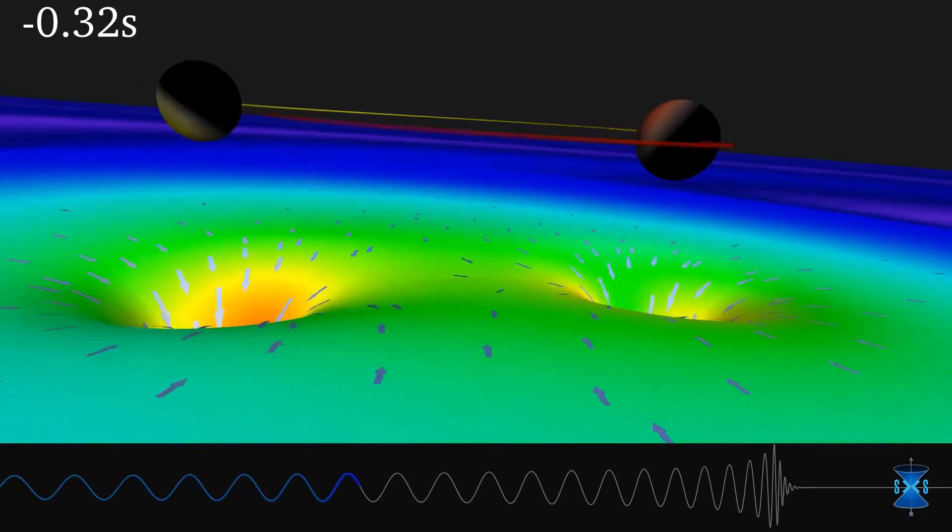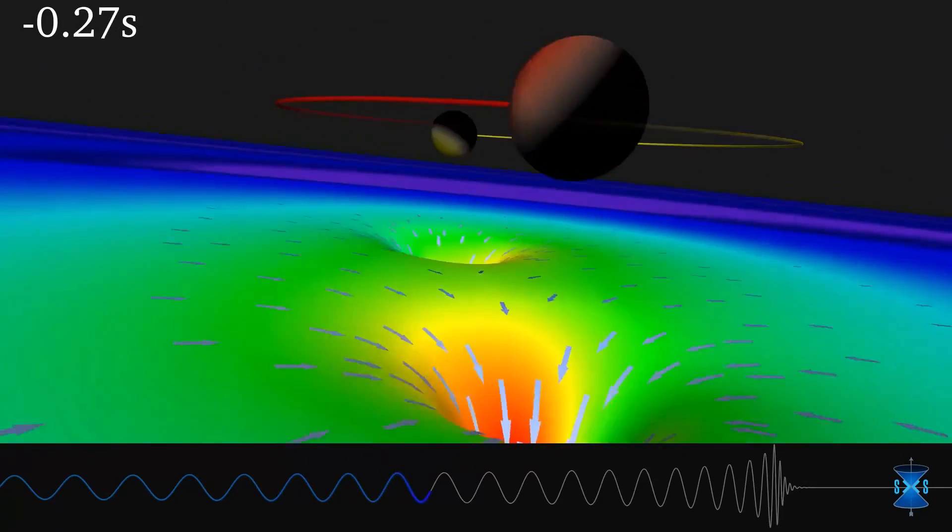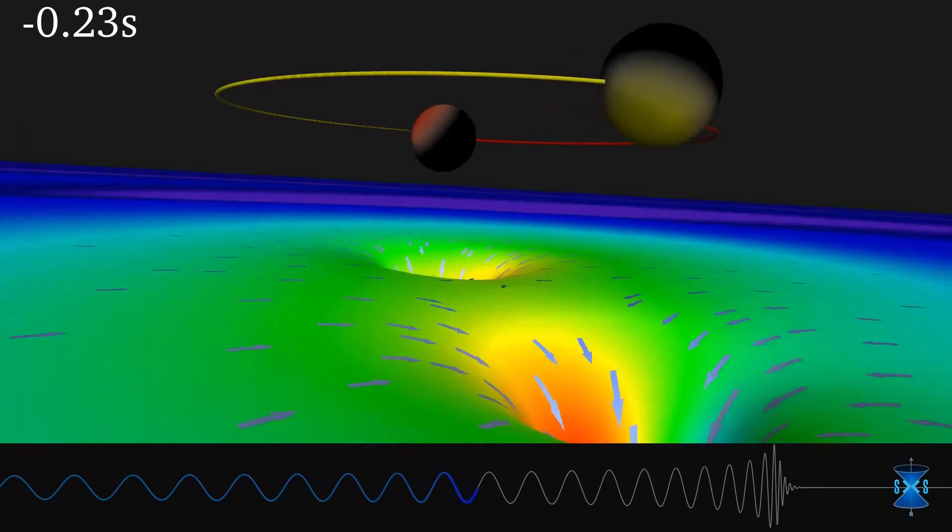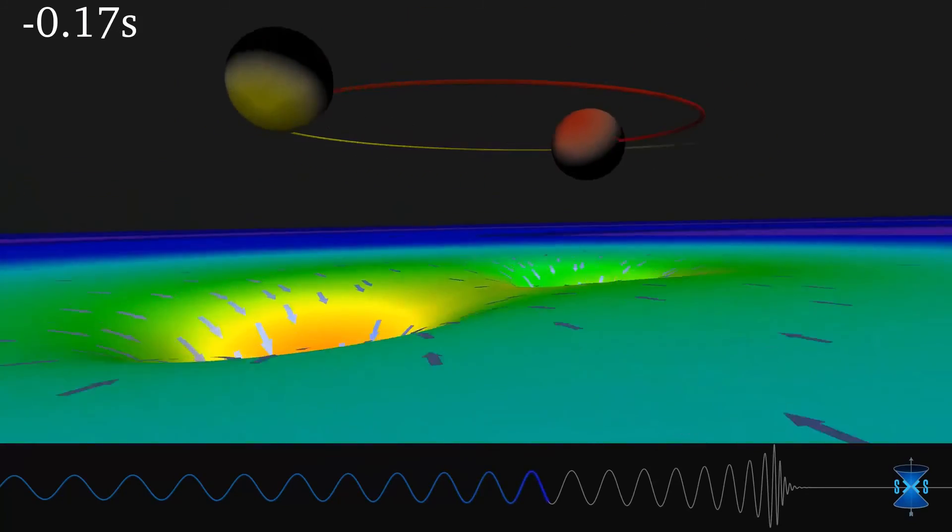As they near each other, their speed increases and they are causing ripples in space-time fabric each round.